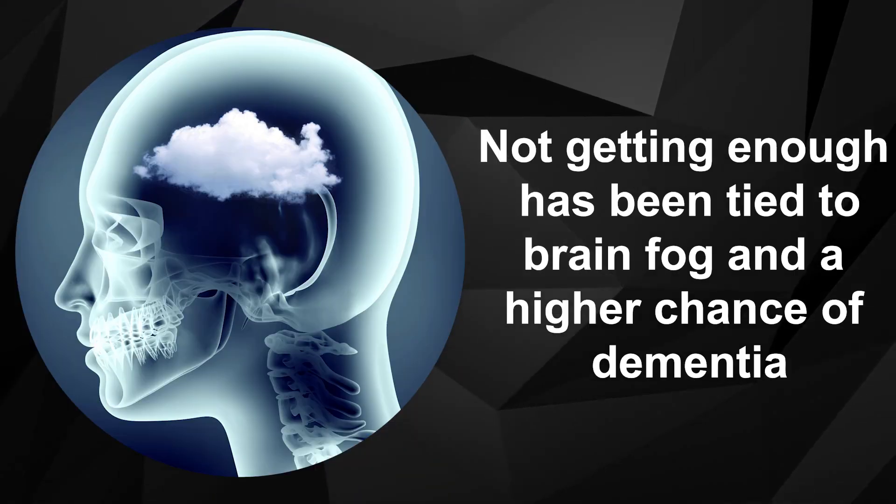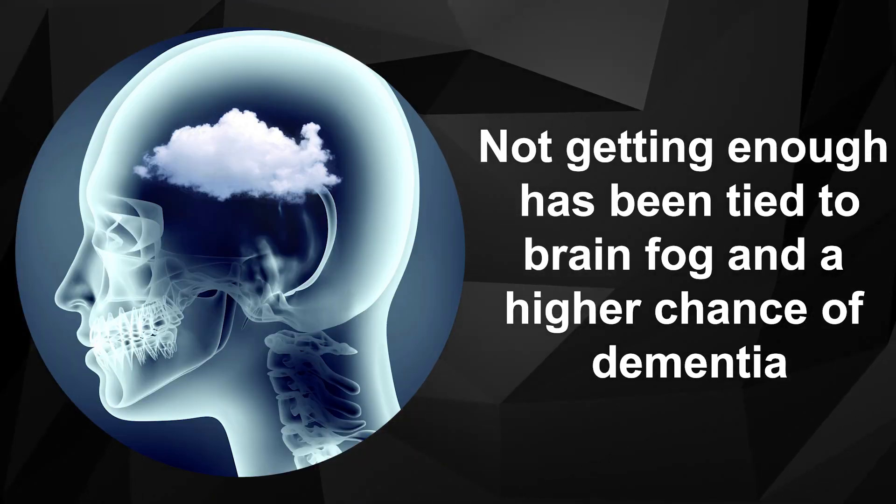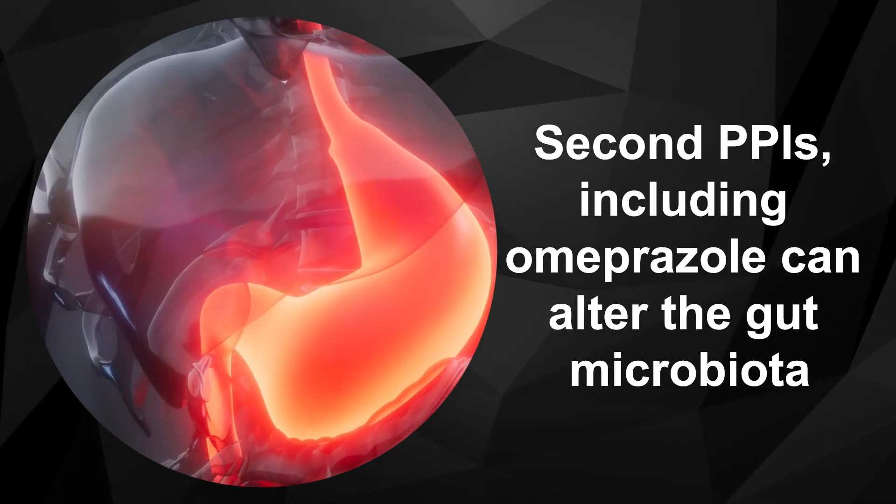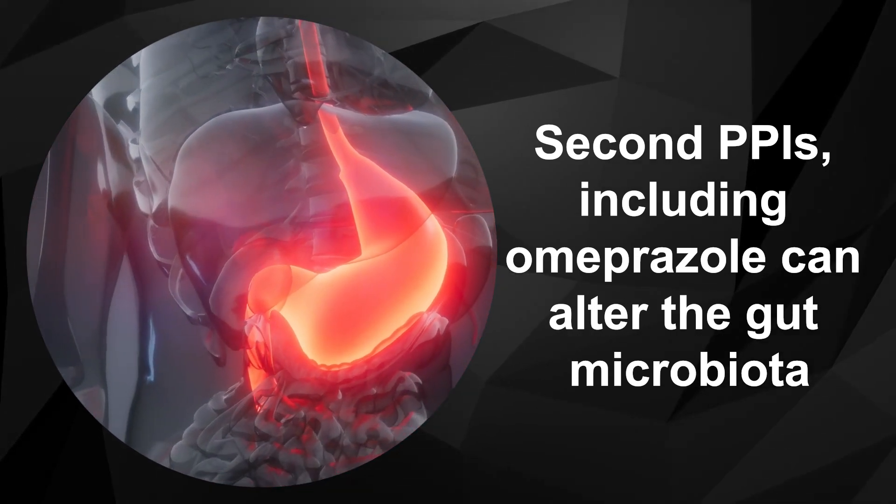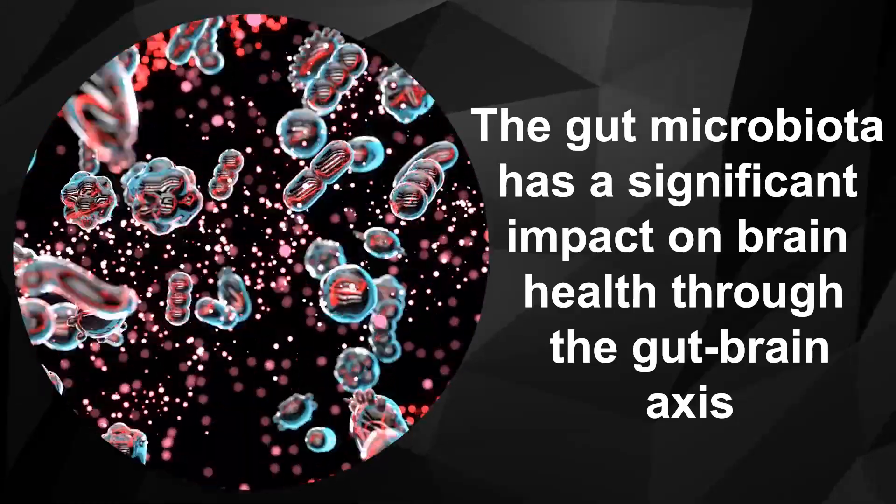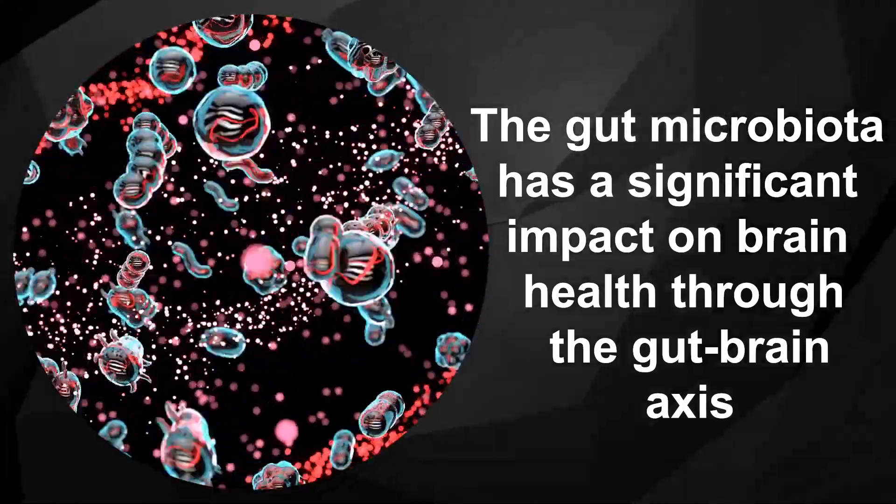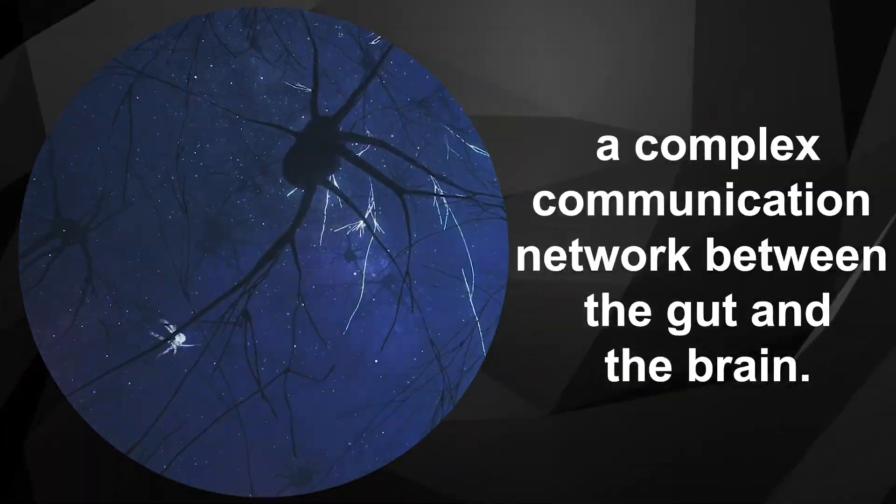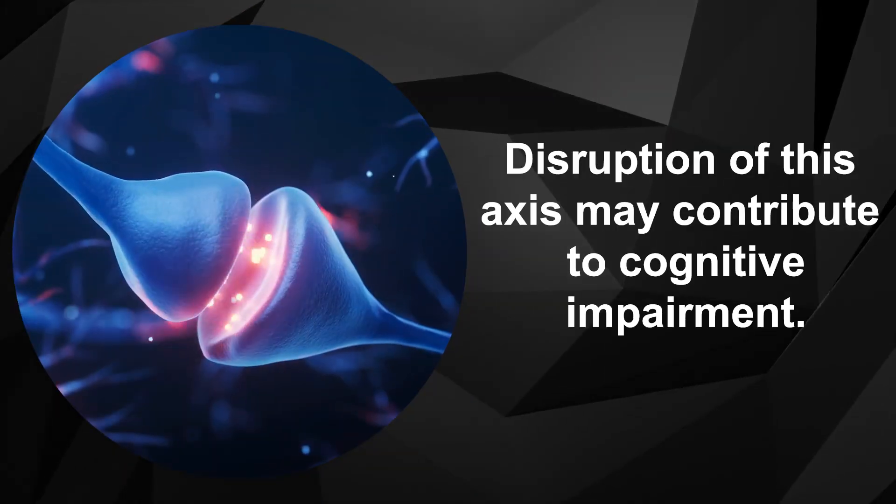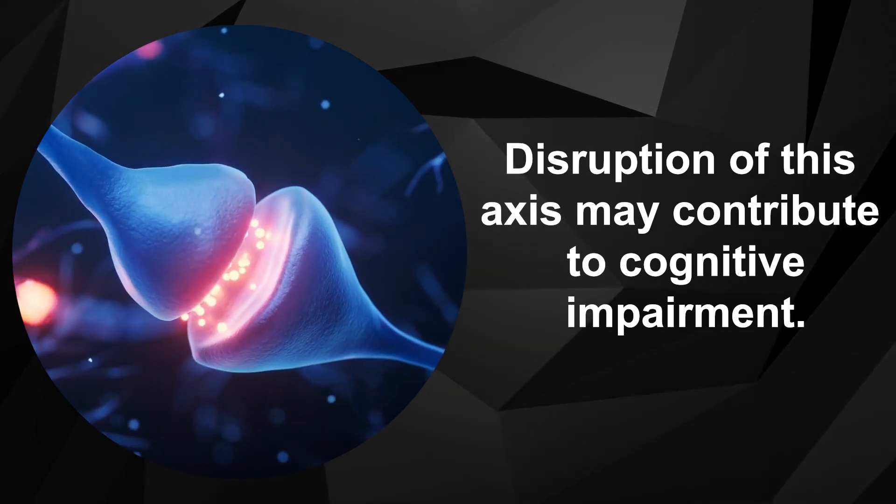Not getting enough has been tied to brain fog and a higher chance of dementia. Second, PPIs, including omeprazole, can alter the gut microbiota. The gut microbiota has a significant impact on brain health through the gut-brain axis, a complex communication network between the gut and the brain. Disruption of this axis may contribute to cognitive impairment.